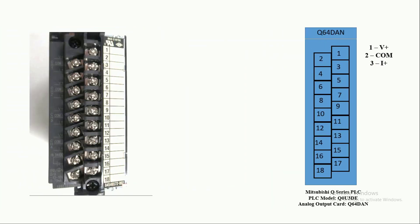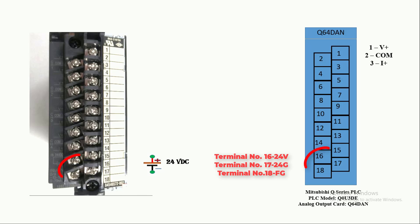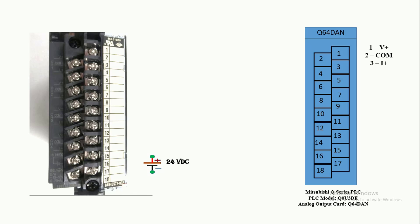Look at the connection terminals for the analog output card, where there are three connection terminals for each channel from which we can get both voltage and current signal of different ranges. For hardware connection, first you have to power up the analog output card with 24V DC power supply. Connect the positive terminal of the power supply to terminal number 16, and the negative terminal to terminal number 17 of the analog output card.